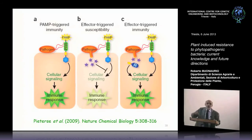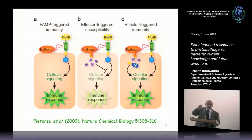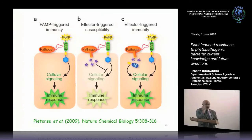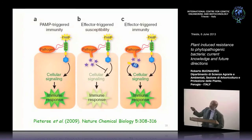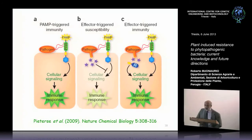Resistance genes are receptors that also contain leucine-rich repeats, able to perceive the effectors and trigger immunity, activating the cascade leading to the immune response. This is the second line of defense, called effector-triggered immunity — ETI.